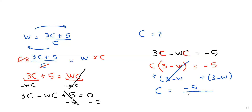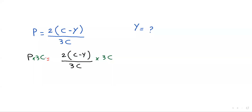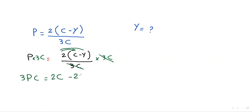Now we want to make y the subject. We multiply both sides by 3c to get rid of the denominator — cancel 3c. So b multiplied by 3c gives 3pc, and on the right we expand 2 times (c minus y), giving 2c minus 2y.